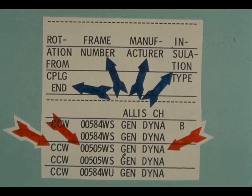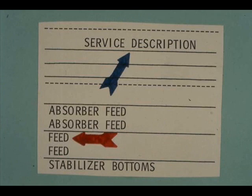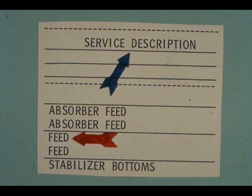Continuing across the page, column headings are rotation from coupling end, frame number, manufacturer, and insulation type. Our example motor rotates counterclockwise; its frame number is 505 WS; it was manufactured by General Dynamics; its insulation type is not listed. The next two column headings are enclosure type and unit or area — the unit is 2 PHLA, that is number 2 power former. The next column heading is service description — the motor we are following is in feed service. The last two column headings are unit item number and driven equipment; this motor has unit identification number M2A and drives a centrifugal pump, yard number 10648.